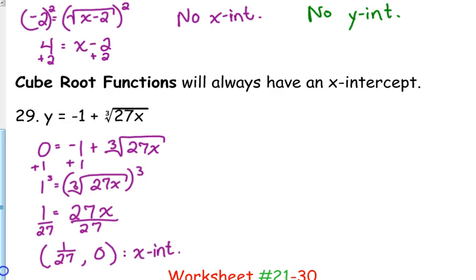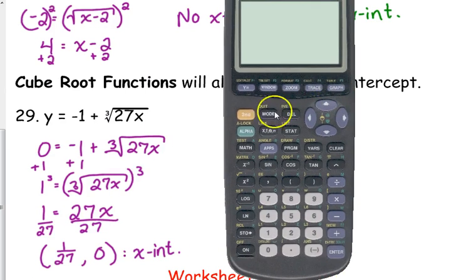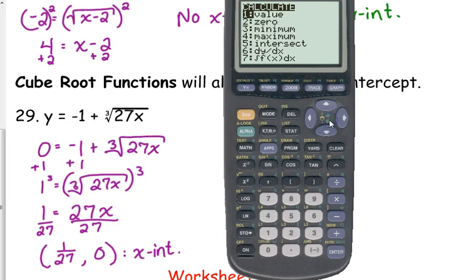The reason why I want it in fractional form is for two reasons. A, it's nicer and neater and more precise. B, technically you can just plug this in your y-equals and use the zero option, or for the y-intercepts you can use the value option. x-intercepts is the zero. To find the y-intercept, you do the value when x is 0.